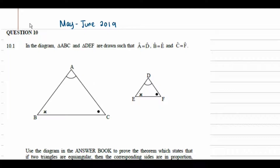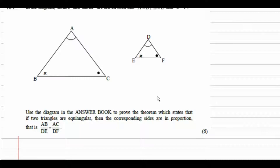We're going to take this from question 10 from the May/June 2019 paper. Question 10.1 states that in the diagram, triangle ABC and triangle DEF are drawn such that angle A equals angle D, angle B equals angle E, and angle C equals angle F. We have to prove the theorem which states that if two triangles are equiangular then the corresponding sides are in proportion — that is, AB over DE equals AC over DF.